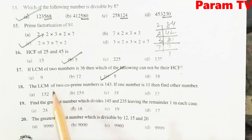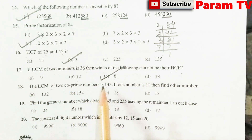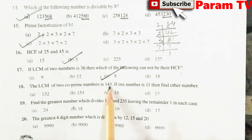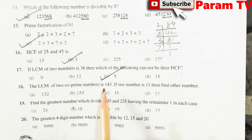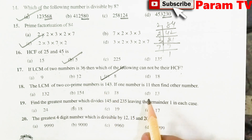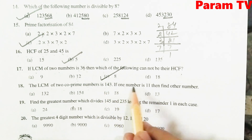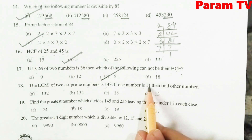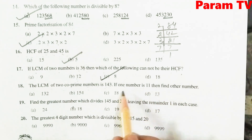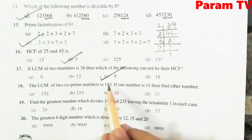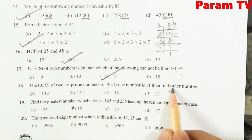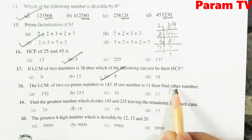The LCM of 2 co-prime numbers is 143. Co-prime का मतलब HCF 1 है. 1 number is 11, तो other number = 143 ÷ 11 = 13. D is the right option.